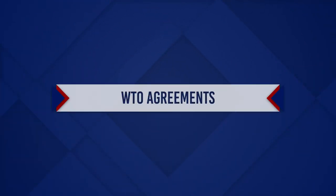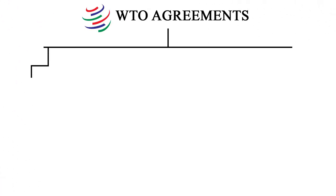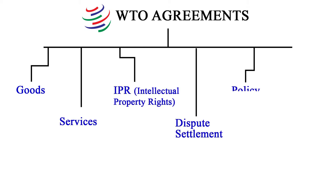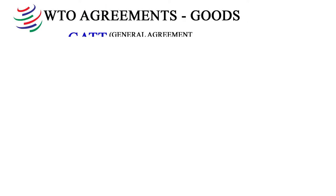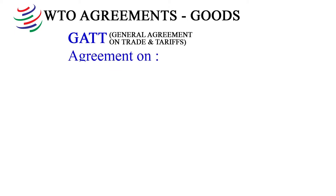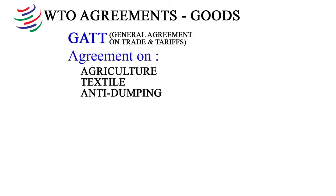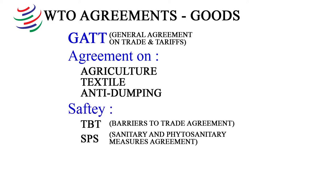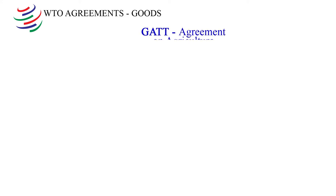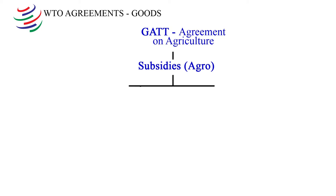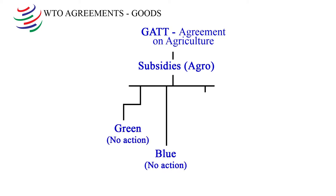We will now see a flowchart of WTO agreements. WTO agreements range across goods, services, IPR, dispute settlement, policy review, and plurilateral. Under goods, we have GATT agreements on agricultural products, textile, anti-dumping, safety agreements TBT and SPS, TRIMS, and SCM. In agriculture, we have three further kinds of agreements: green, blue, and amber.